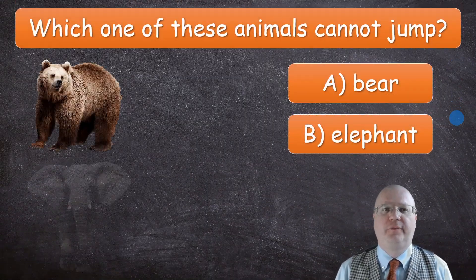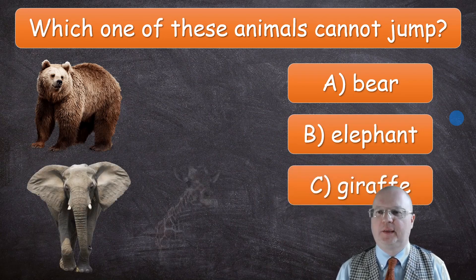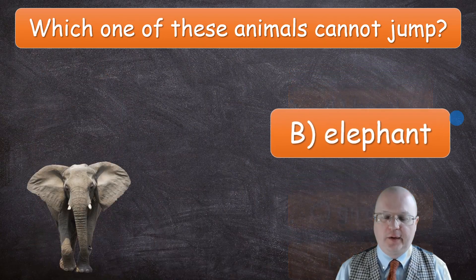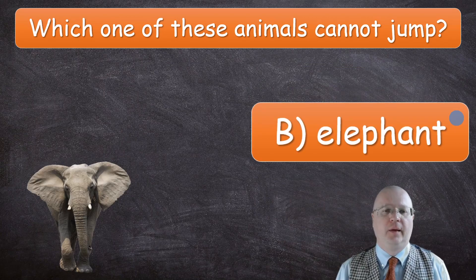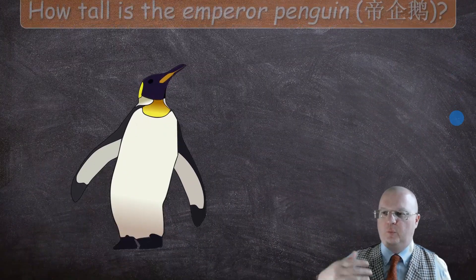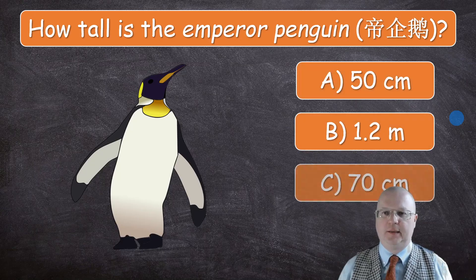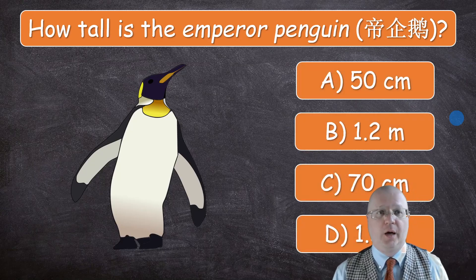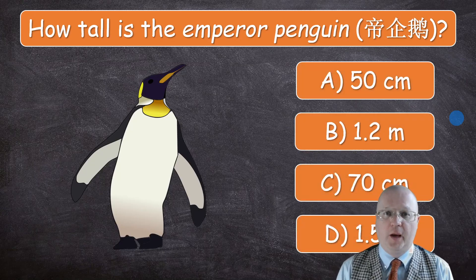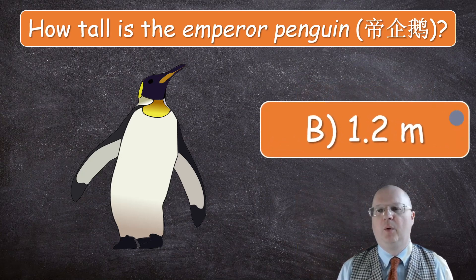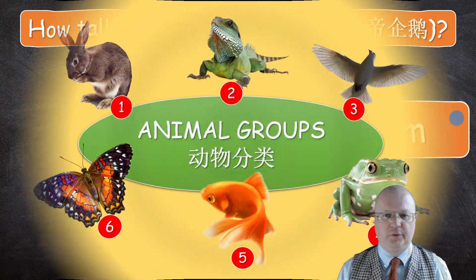Next: which one of these animals cannot jump? The correct answer is elephant. You invite one boy and one girl to stand up. And here's the third question: how tall is the emperor penguin? The correct answer is B — 1.2 meters. Then you go into the lesson topic: animal groups.